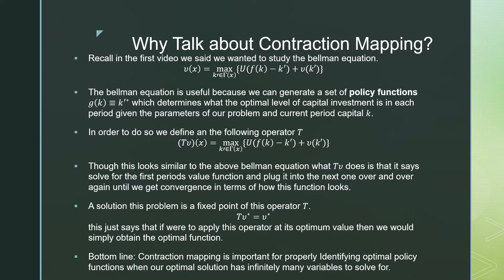The solution to this problem is a fixed point of this operator T, meaning that our goal is not necessarily to find an optimal value, it's to solve for this optimal function v within our function. This simply says that if we were to apply this operator at its optimum value, it would simply obtain this optimal function. Bottom line, contraction mapping is important for properly identifying optimal policy functions when solving an optimal solution which has infinitely many variables to solve for, which is the problem that we are dealing with.